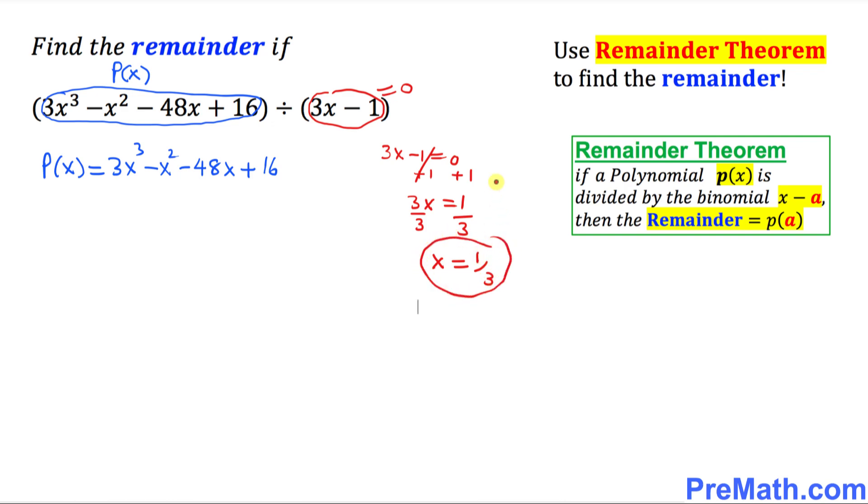Whatever we put down, this 1 over 3, we're going to replace wherever you see x over here. So this become P of 1 over 3 equal to 3 times 1 third power 3 minus 1 over 3 square minus 48 times 1 over 3 plus 16.